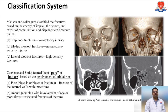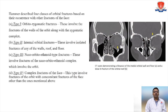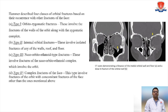Hemmer described four classes of orbital fractures based on their occurrence with other fractures. Type 1: orbitozygomatic fracture — fracture of the wall of the orbit along with the zygomatic complex. Type 2: internal orbital fracture — associated fracture of any of the walls, roof, and floor. Type 3: NOE fracture — naso-orbito-ethmoid type fracture involving the naso-orbito-ethmoid complex. Type 4: complex panfacial fracture — fracture of the orbit with comminuted fracture of the face beyond the above types.